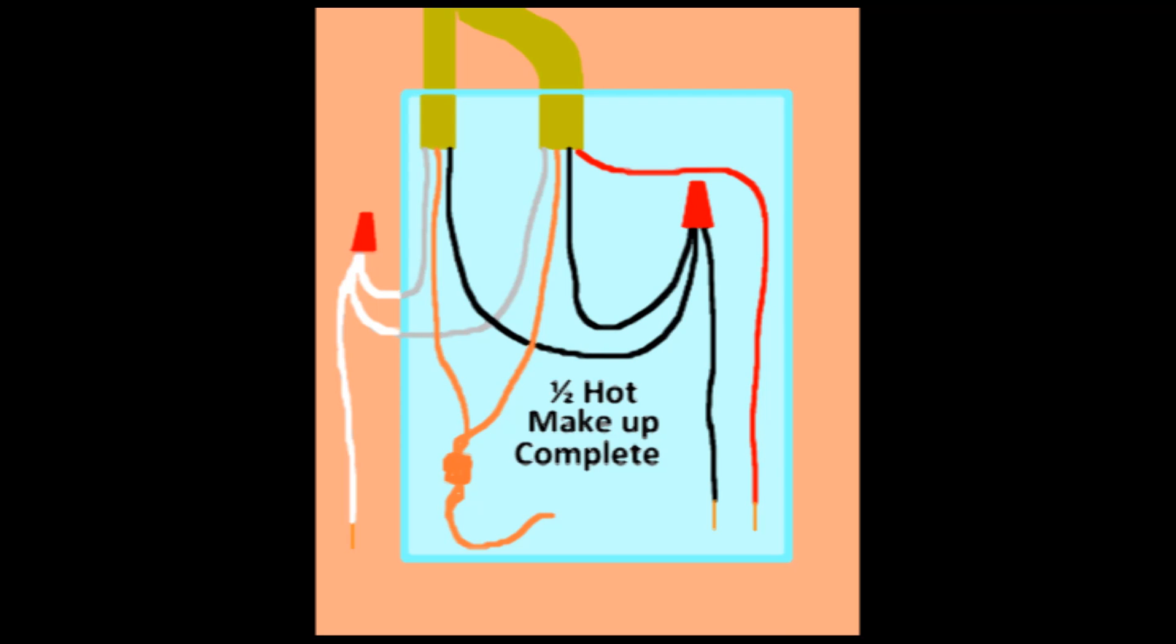Taking a closer look at the outlet or receptacle box, we see that it is made up similar to the switch box except that the black, neutral, and ground wires are all pigtailed together and there's a lone red wire that is going to be used as a switch leg for the half-hot.